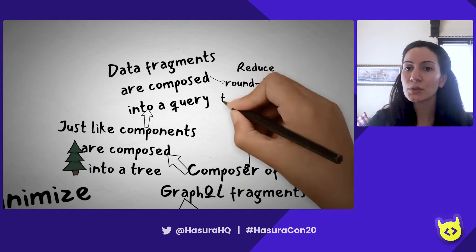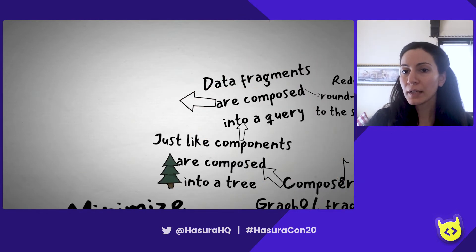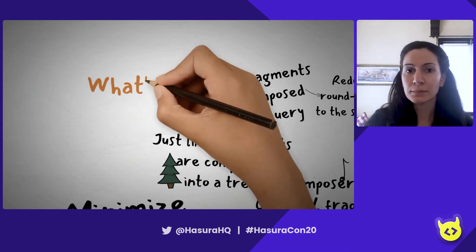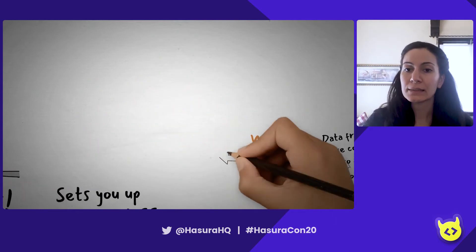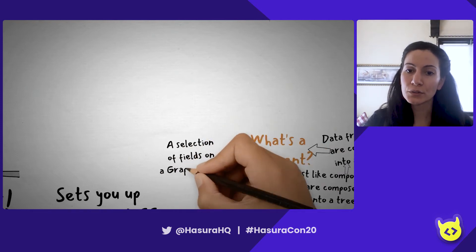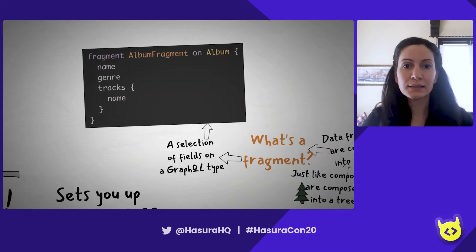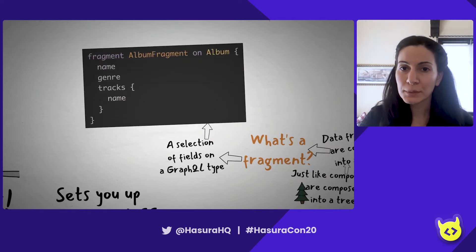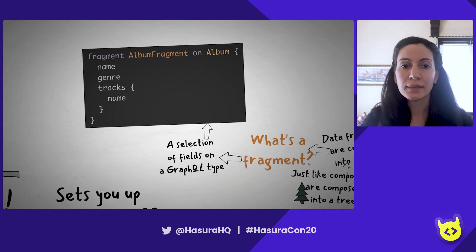This is so that we can reduce round trips to the server because the compiler can maximize our efficiency. If you don't know what a fragment is, it's a selection of fields on a GraphQL type. Here is an album fragment on type album, and we're selecting the fields name, genre, and the names of the tracks.